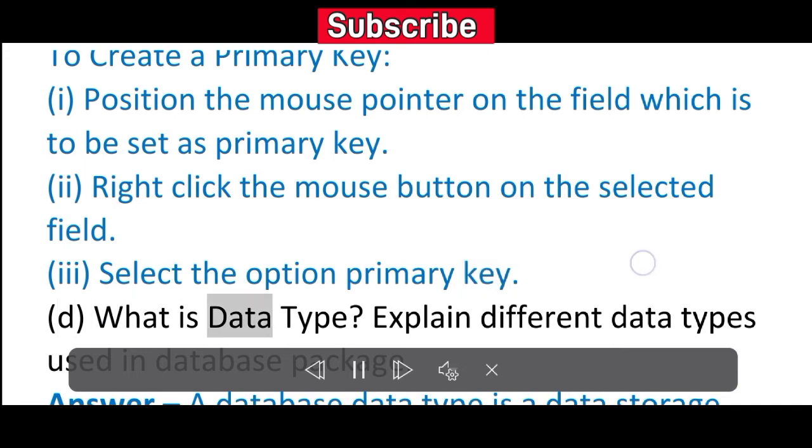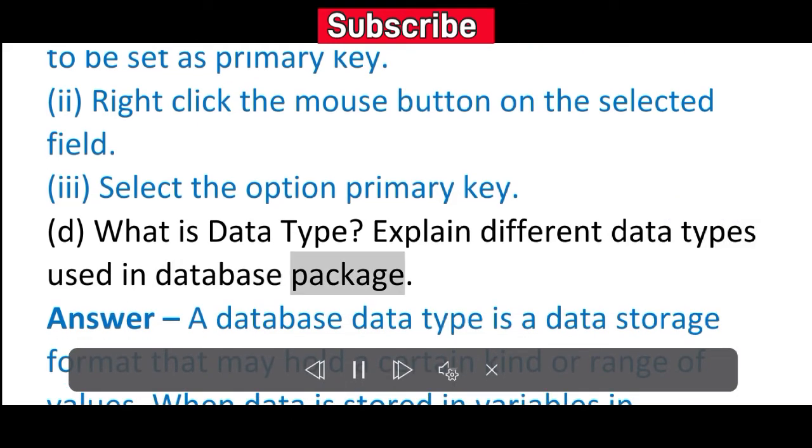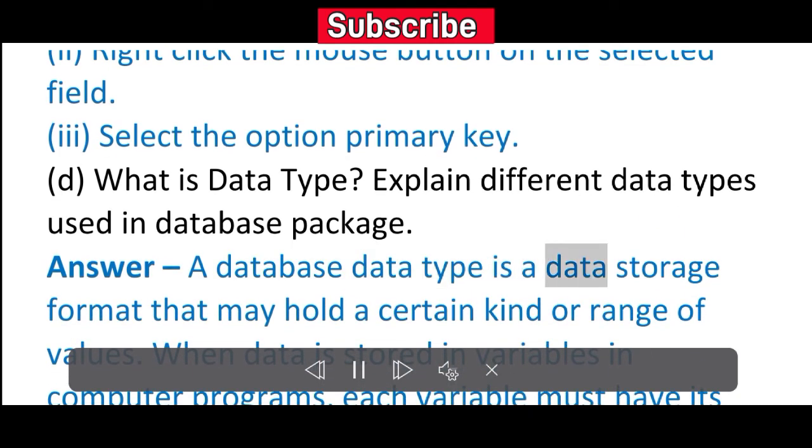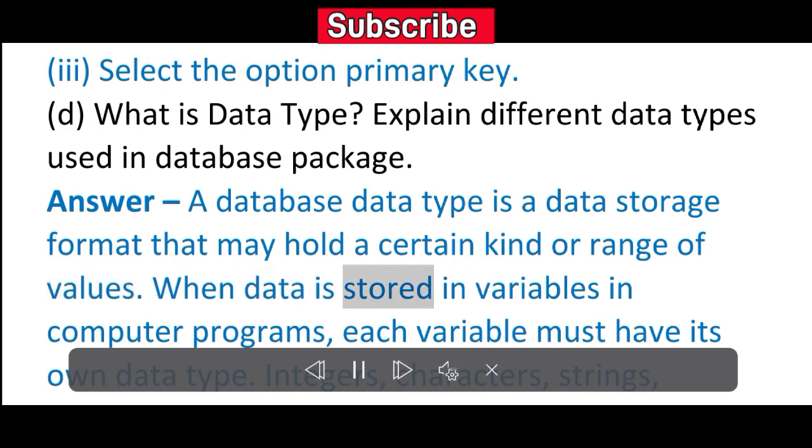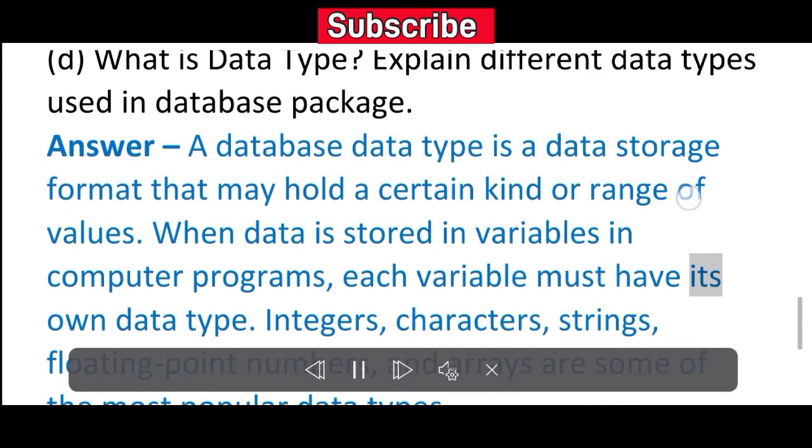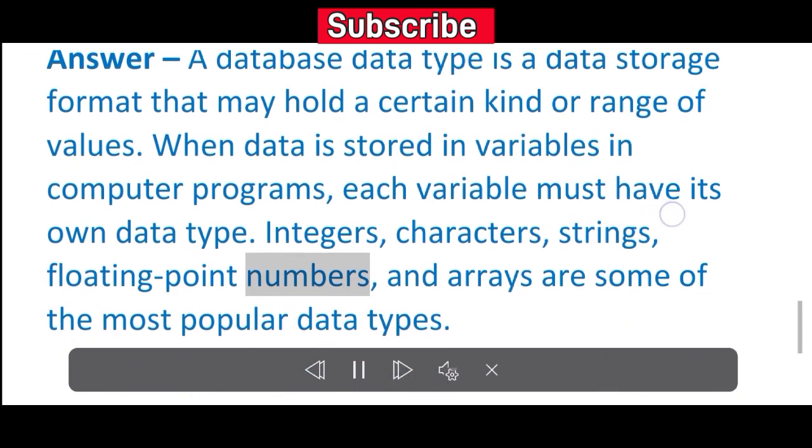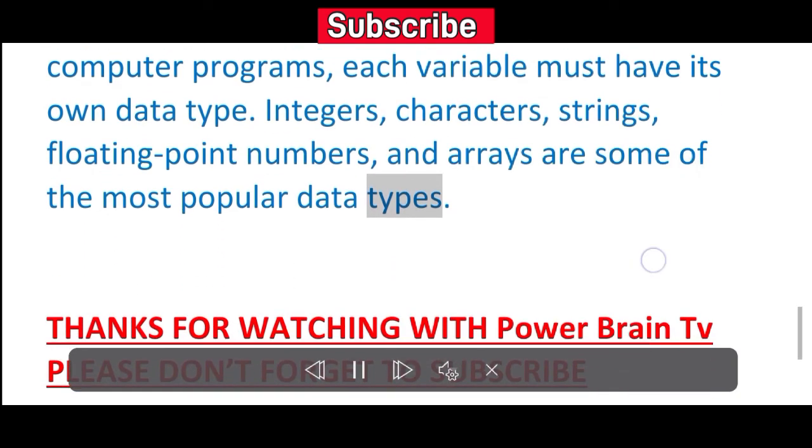D. What is data type? Explain different data types used in database package. Answer: A database data type is a data storage format that may hold a certain kind or range of values. When data is stored in variables in computer programs, each variable must have its own data type. Integers, characters, strings, floating point numbers, and arrays are some of the most popular data types.